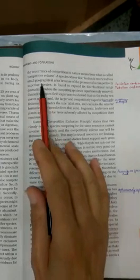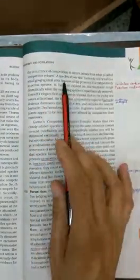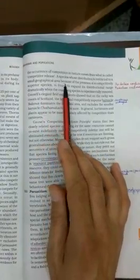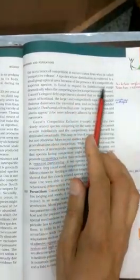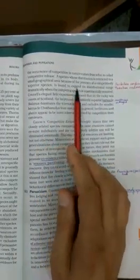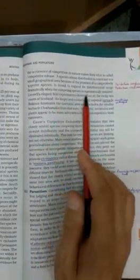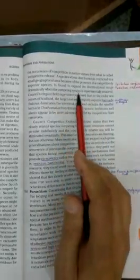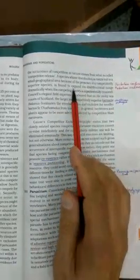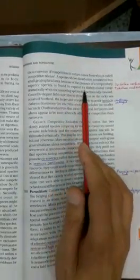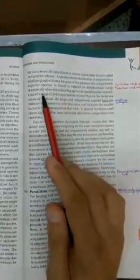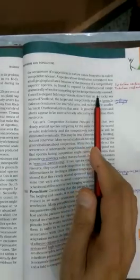Let's go through the NCERT. A species whose distribution is restricted to a small geographical area—a species which is a weak one will definitely be found in a small geographical area because of the presence of a competitively stronger or superior species. When the competing stronger species is experimentally removed, it was found that the weaker species is going to expand its distributional range dramatically when the competing species is removed.